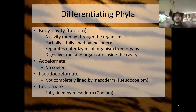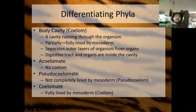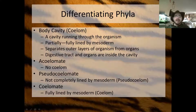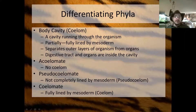We left off talking about the coelom, the body cavity. A body cavity is a coelom. An acoelomate has no coelom. A pseudocoelomate has a pseudocoelom, or a body cavity not completely lined by mesoderm. And a coelomate has a coelom, which is a body cavity fully lined by mesoderm.